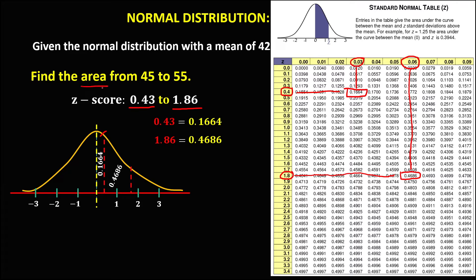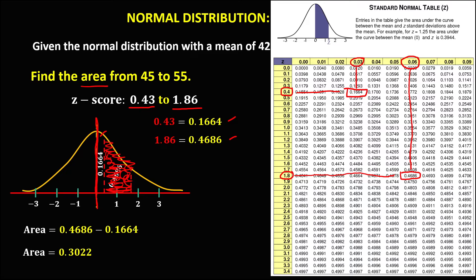Since we need the area from 0.43 to 1.86, the unknown area is away from the mean on the same side. Because it is away from the mean, we need to subtract the two areas — bigger minus smaller. The total area equals 0.3022, or 30.22%.